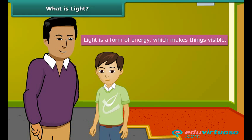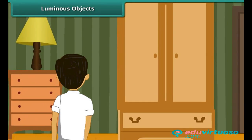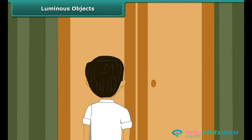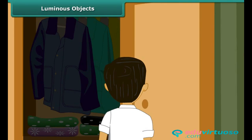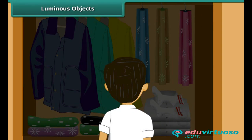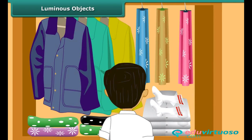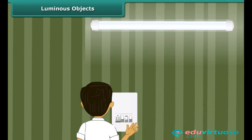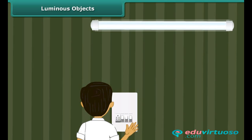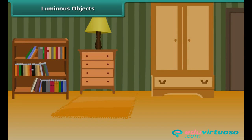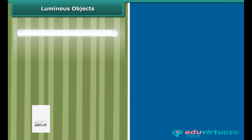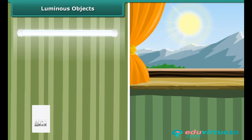You are getting late for school and are not able to find your socks. You search for them in the cupboard, but since it is dark you switch the tube lights on. Once you locate the socks, you switch the lights off because there is sufficient daylight. We just talked about two types of light: the light from the tube lights, and daylight, which is the light from the sun.